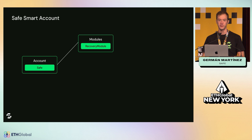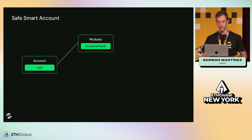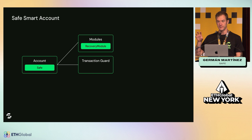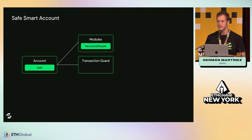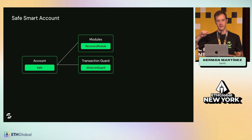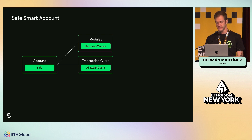For example, a recovery module that at some point allows executing a transaction in the SAFE that replaces the signers. So if you lose access to the account, you can recover it later. We also have transaction guards — logic that can be added when transactions are executed. They are able to parse the transaction, read the destination, the value, the data, and some other parameters and act on that. For example, an allow list guard that has a list of addresses — if a transaction is executed, this guard checks the destination and if it's not in the list, the transaction would be reverted.